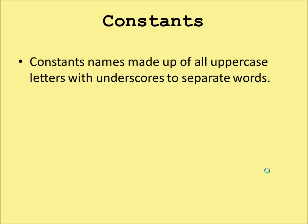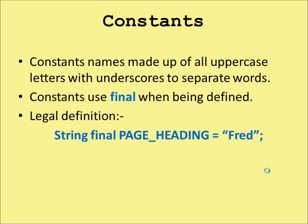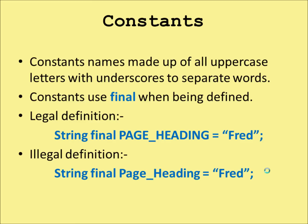For constants, names are made up of all uppercase letters, maybe with underscores to separate the words. Constants use the keyword 'final' when being defined. A legal definition would be: 'String final PAGE_HEADING = "Fred";' or whatever text you want the page heading to be, with a semicolon at the end. An illegal name would be 'page_heading' or 'pageHeading' in lowercase — constants are all uppercase.